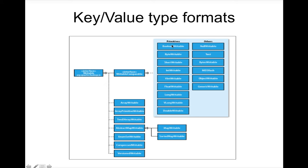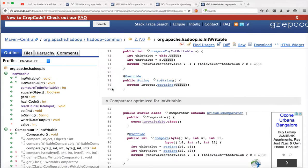All these classes implementing WritableComparable can be used as key types. There are also a bunch of other classes in the MapReduce API that implement only the Writable interface, and they can only be used for value types, not for key types. So if you want to both store in HDFS and use as keys in your map or reduce function either for input or output, that class must implement WritableComparable. If you just want to read from HDFS, write to HDFS, or pass between the map function and reduce function without comparing, then you only need to implement the Writable interface.